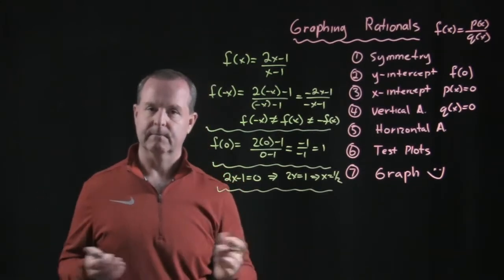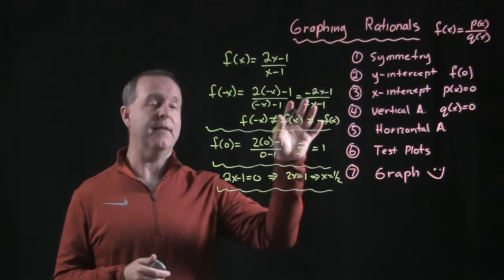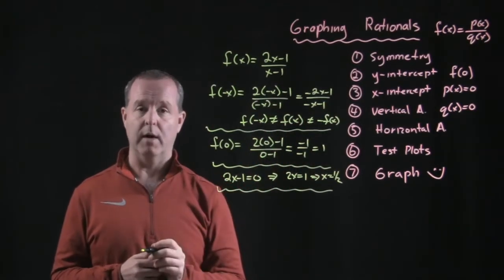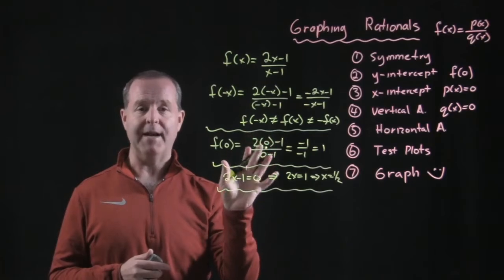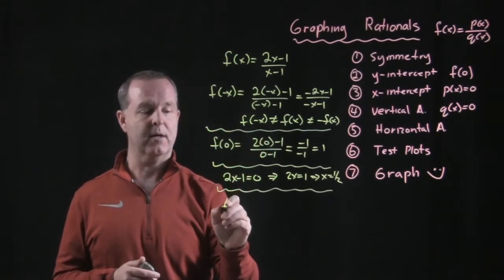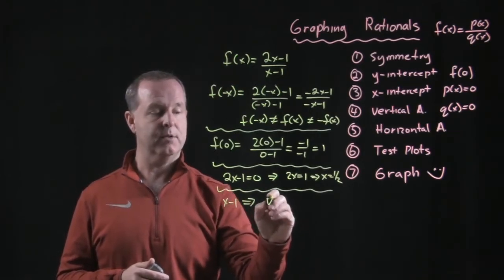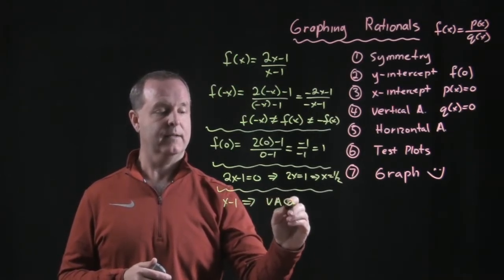Vertical asymptotes. How do we determine its vertical asymptotes? We determine by looking at the denominator. Denominator is x minus one. We first factor out any common factors with the numerator. There are none, so based on x minus one, that tells me I have a vertical asymptote at x equals one.